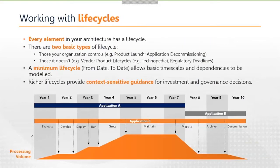Every element in your architecture — be it a technology, a process, a business product, data, or applications — regardless of which area of the architecture you're working in, every element potentially has a life cycle. You can categorize these in different ways, but I like to categorize them into two categories: those things that your organisation controls, like a product launch or the decommissioning date for an application; and those things it has no control over — life cycles which are simply imposed on you, such as vendor product life cycles, for example when a particular version of SQL Server goes out of support.